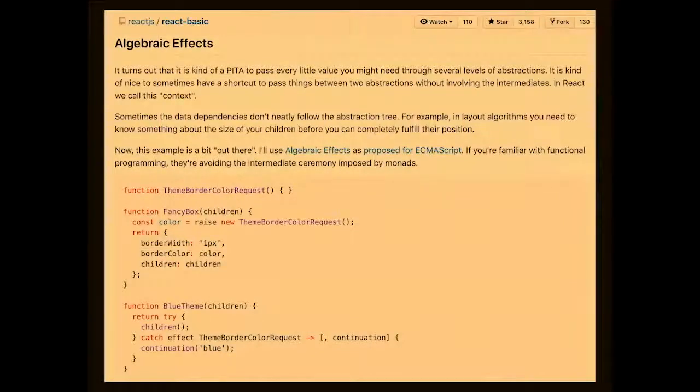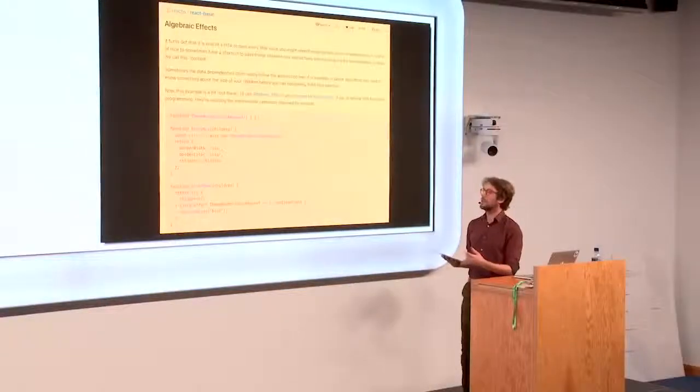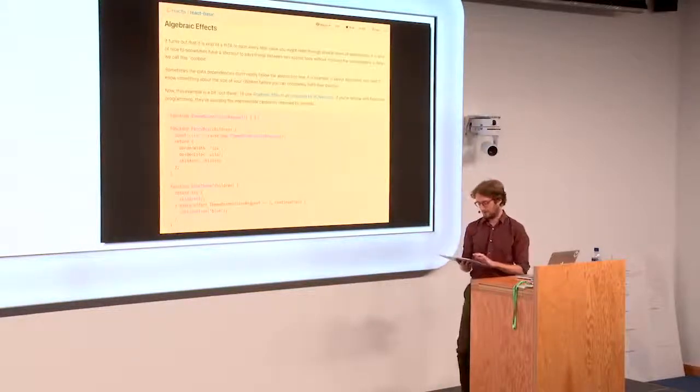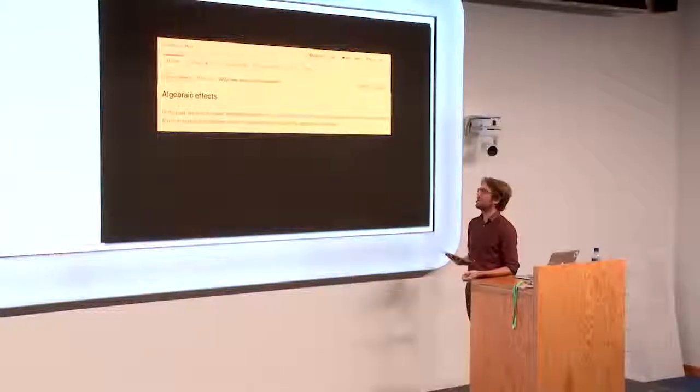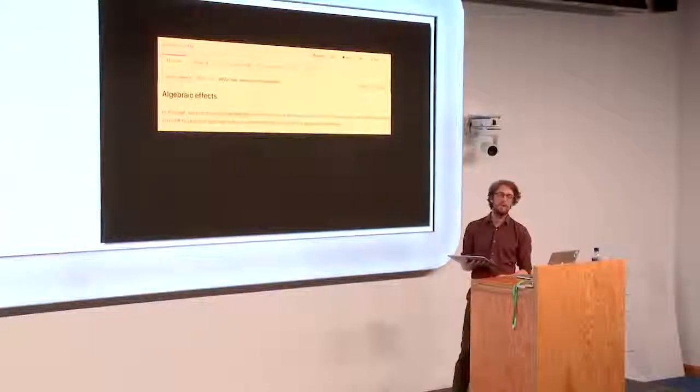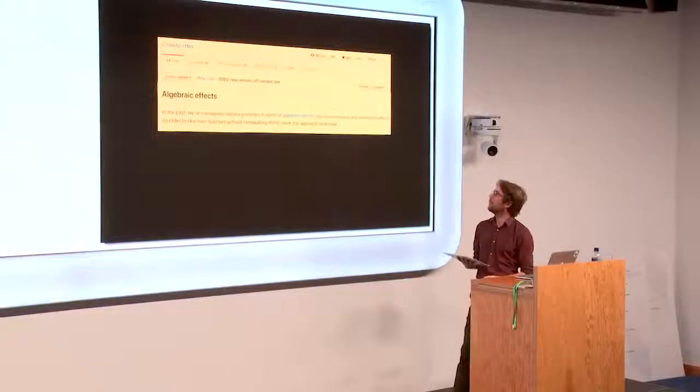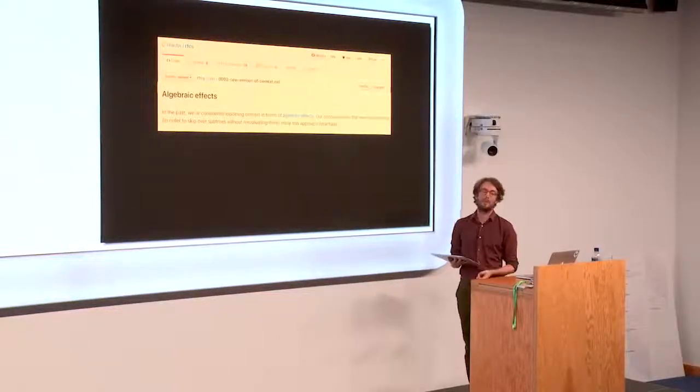And algebraic effects is another of those core concepts in the React basic repo. And the example used to illustrate it was fetching context. So the idea was that you could raise an effect. You would then have a handler down here that was responsible for actually getting the value from context. And then you would call the continuation to pass that back to the original component. This idea was abandoned.